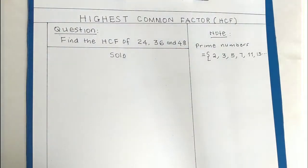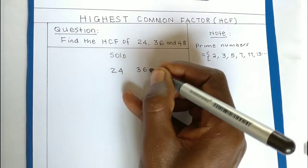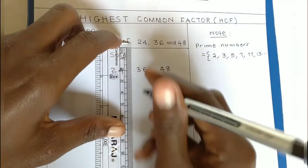When they ask you to find the highest common factors of 24, 36, and 48, the best thing to do is draw a 3-column table. I will start by drawing 24, 36, and then 48. Come up with a table of this nature.